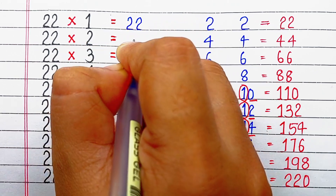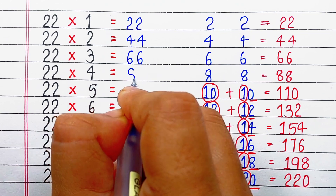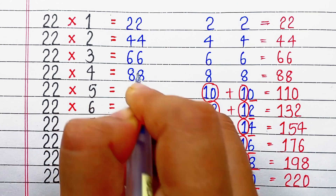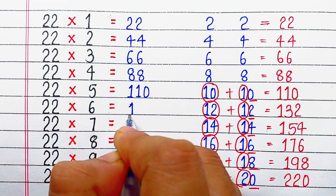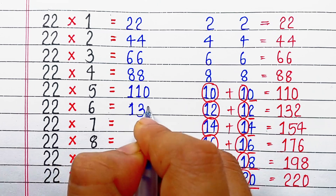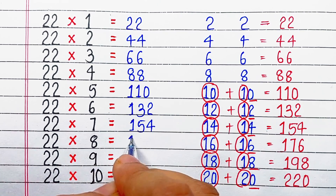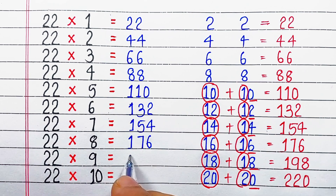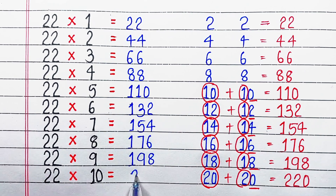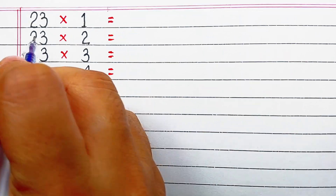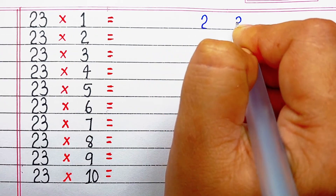So let's start writing: 22 ones are 22, 22 twos are 44, 22 threes are 66, 22 fours are 88, 22 fives are 110, 22 sixes are 132, 22 sevens are 154, 22 eights are 176, 22 nines are 198, 22 tens are 220. Now we will learn the trick for the table of 23.